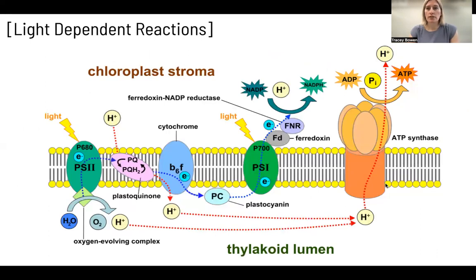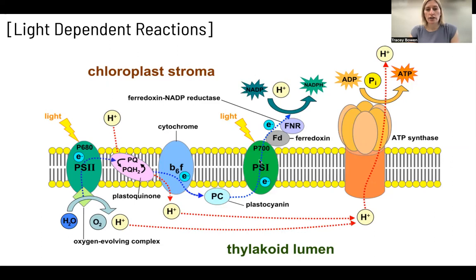This is the light dependent reaction — what's happening in the thylakoids. Water is being used as a hydrogen ion donor, and it goes through lysis, which splits it. It makes oxygen, which is a waste product and will diffuse out of the stomata of the leaves, and hydrogen ions are also created. The electrons are picked up by photosystem two, excited by light, and then they move down this chain to B6F, then to plastocyanin and up to photosystem one, where the electron is recharged with light and used to reduce NADP to make NADPH. The high concentration gradient is inside the lumen so that hydrogen ions flow through ATP synthase and make ATP from ADP.